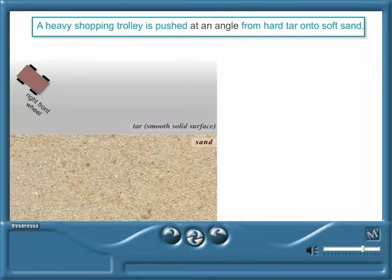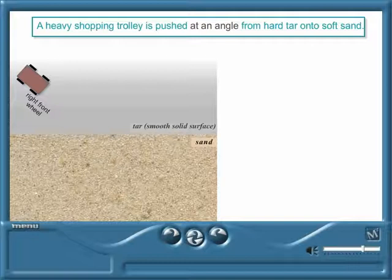To explain what happens to light when it enters a new medium, we will use the analogy of a shopping trolley being pushed at an angle from smooth tar onto soft sand. Click on the trolley.